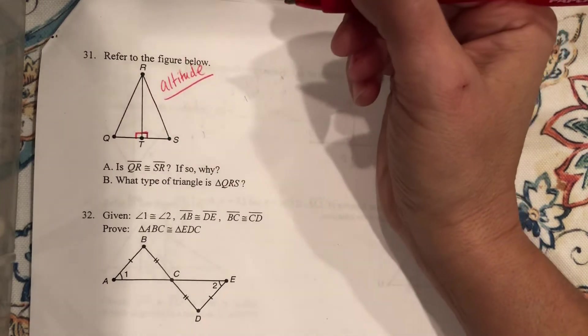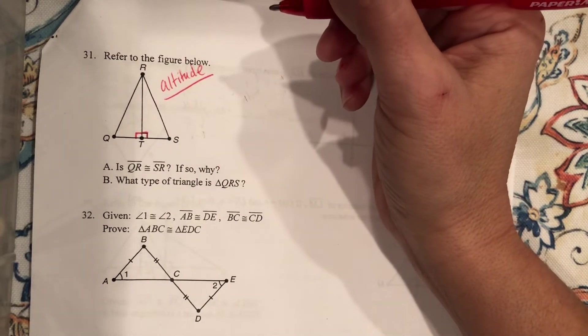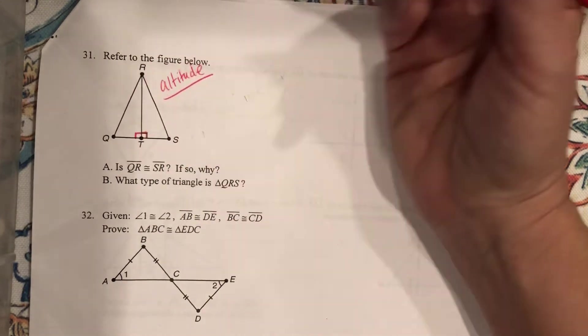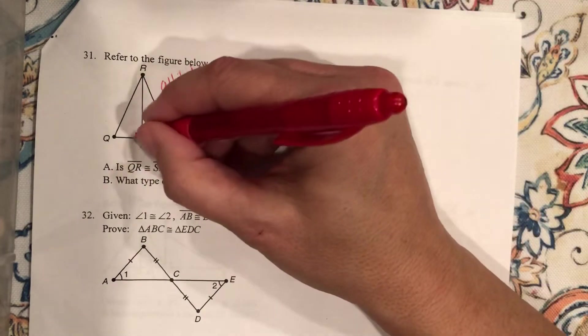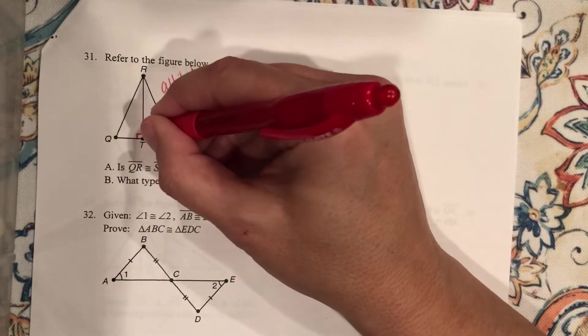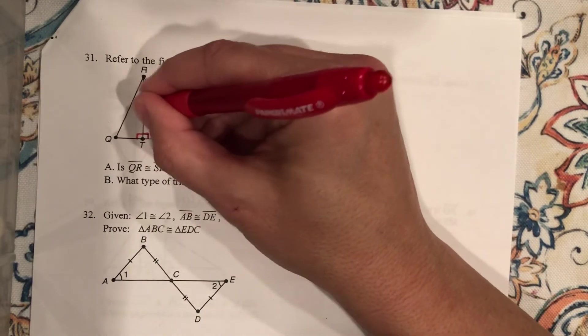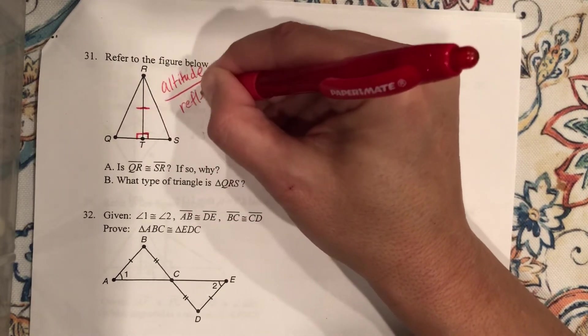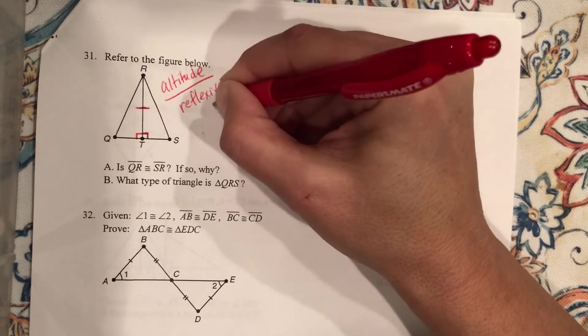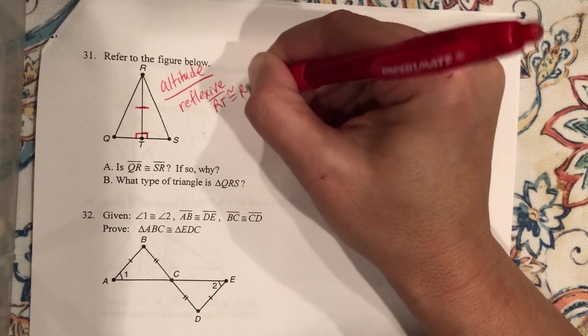Okay. That's an altitude. I know that because it goes from the vertex to the opposite side at 90. Okay, great. That tells me that those are two right angles, because I already had a right angle there. I can also use the reflexive property to establish that RT is congruent to itself, right?